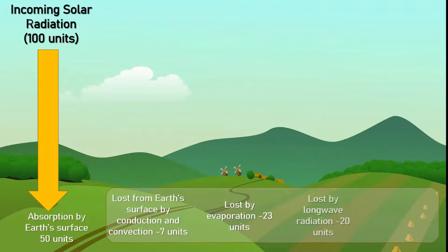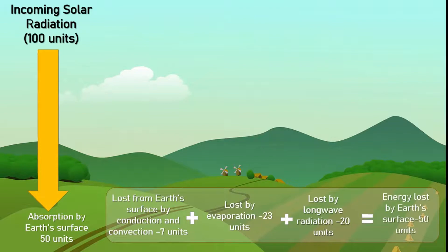Long wave radiation is the heat emitted by earth's surface. So in total, we have now accounted for all 50 units of energy absorbed earlier by earth's surface.